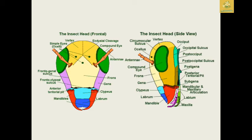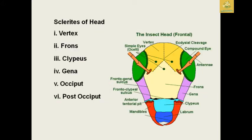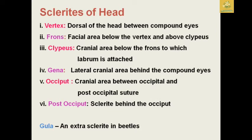I have given the diagram of the insect head in frontal view as well as side view. The structures include the compound eye, ocelli, vertex, frons, gena, clypeus, as well as the frontal and antennal regions. I have given the six main segments of the insect head which are vertex, frons, gena, clypeus, occiput, and postocciput.